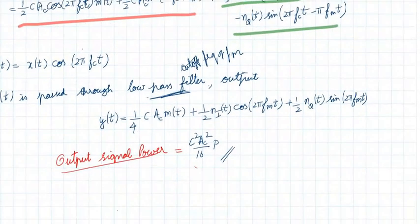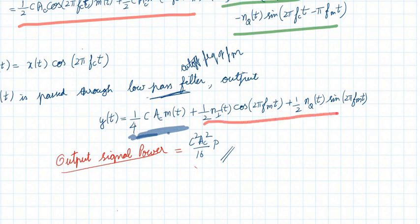From the output y(t), the message signal power is computed as follows: the power of m(t) is P, and the constant term is cAc/2, so squaring gives c²Ac²/4, and with the additional factor of 1/4 from squaring the 1/2 from the multiplication, the output signal power is c²Ac²P/16.